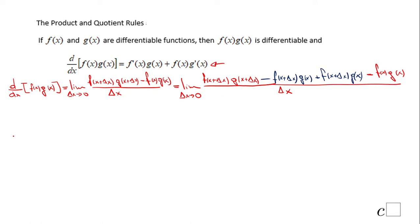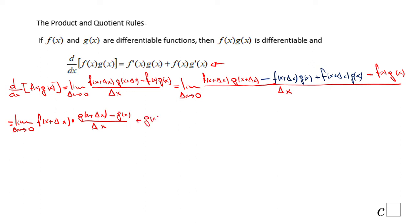We rearrange the limit in this form. We have the limit as delta x approaches zero of f(x + delta x) times the quotient [g(x + delta x) minus g(x)] over delta x, plus g(x) times the quotient [f(x + delta x) minus f(x)] over delta x. That is the arrangement from the second step.